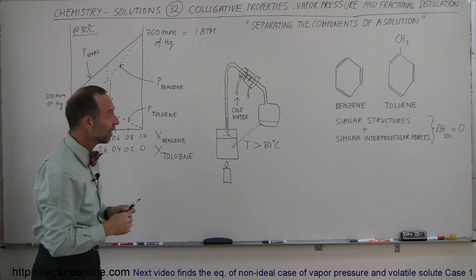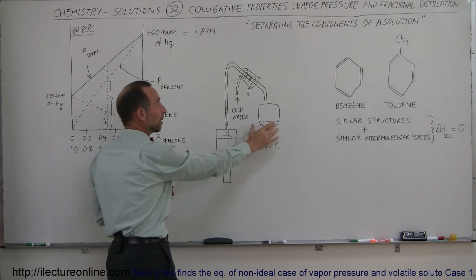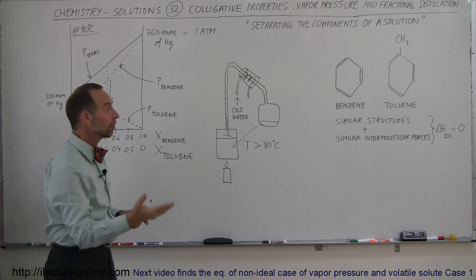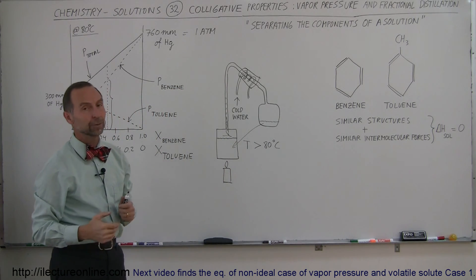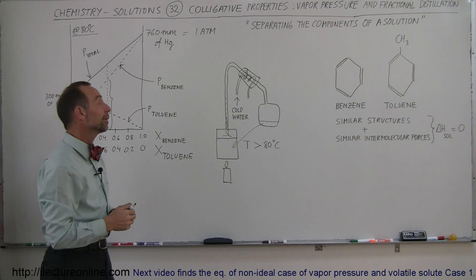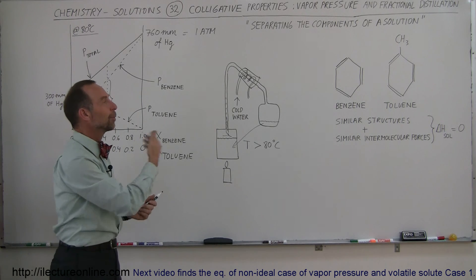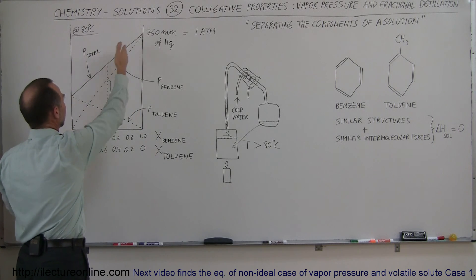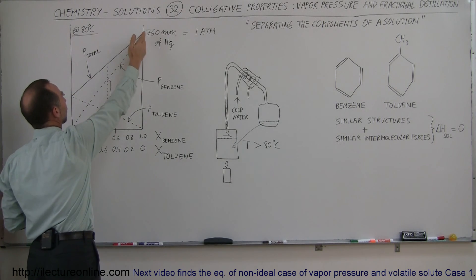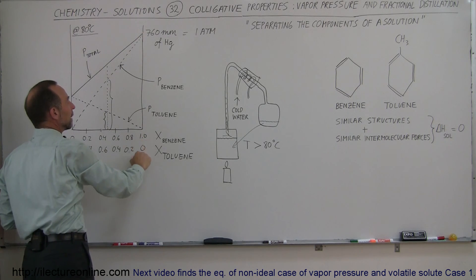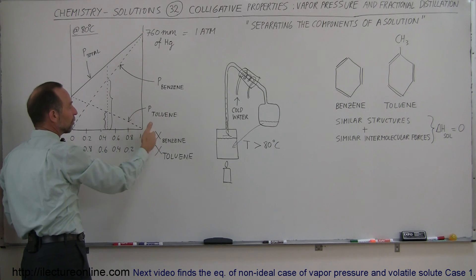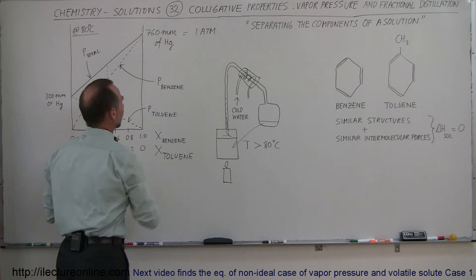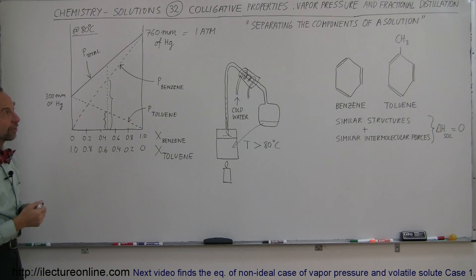By the time you do this three, four, or five times, just about 100% of the liquid you end up with will be benzene and almost none of it will be toluene. You've now separated the benzene from the toluene, and that's what we call fractional distillation. It simply has to do with the way vapor pressures add up — the higher the concentration of benzene, the more benzene goes into vapor phase and the less toluene goes into vapor phase.